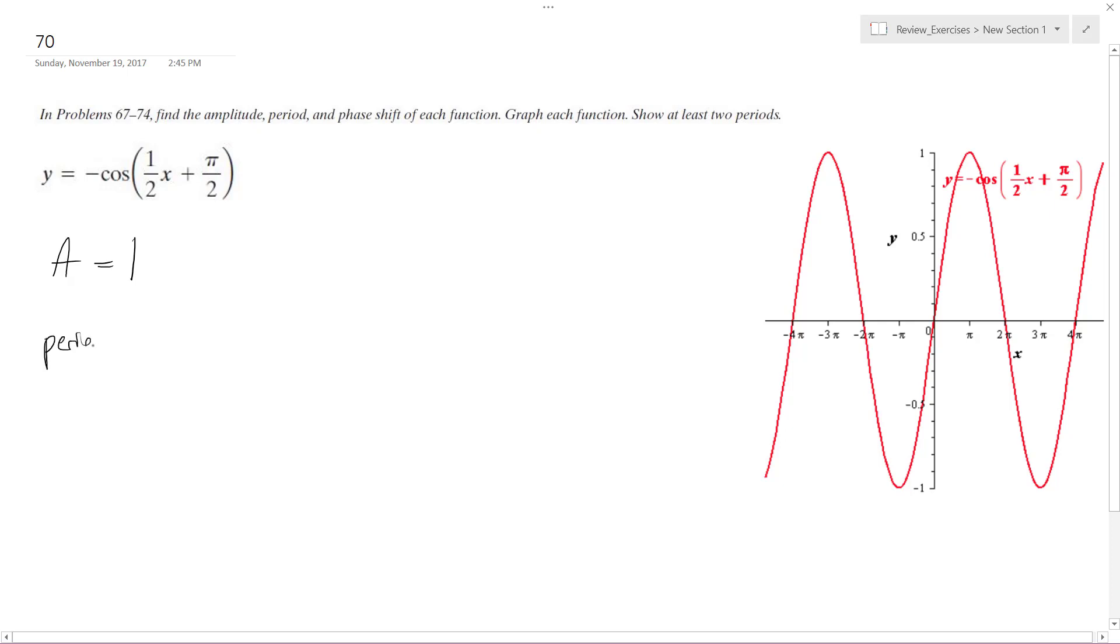Period is going to be two pi divided by omega, which is the coefficient in front of x, which is one half. So two pi divided by one half is equal to four pi.